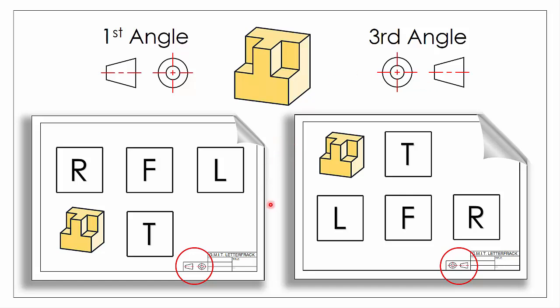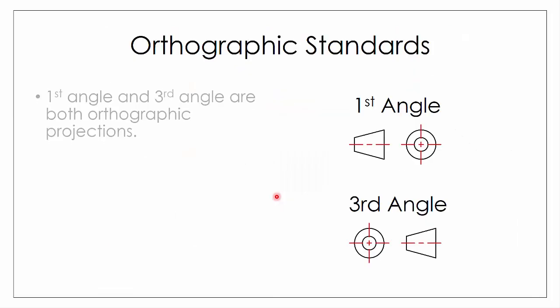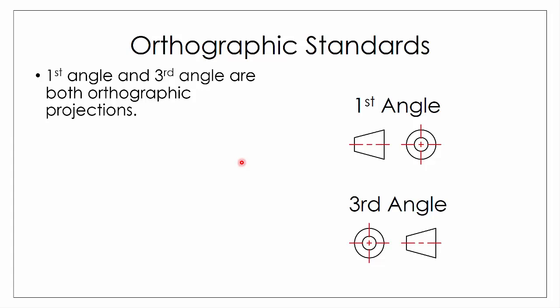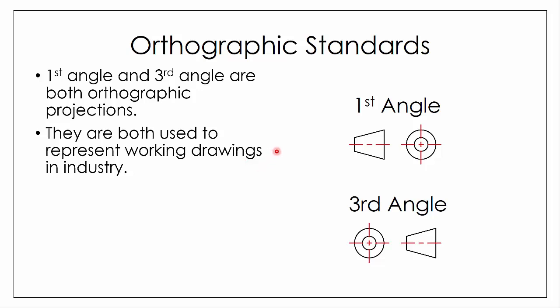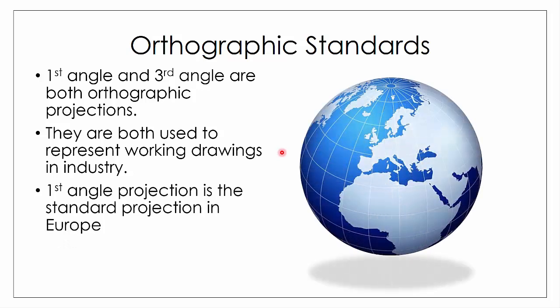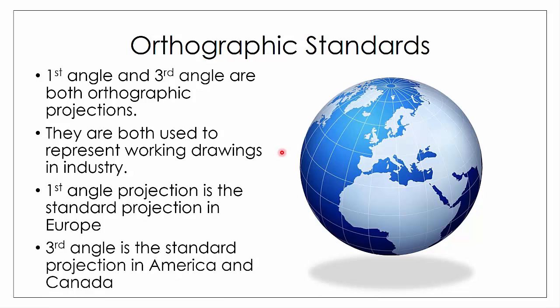Now let's have a look at the background of first and third angle. Both are orthographic projections — that is, they give an undistorted, multi-view representation of the object, broken up into plan, elevation and end view. Both are used to represent working drawings, so the function of both is exactly the same. Whether you use first angle or third angle depends on what part of the world you're in. First angle is the standard projection in Europe, whereas third angle is standard in America and Canada.